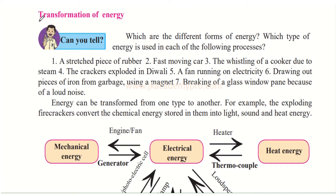The next topic we will learn is called Transformation of Energy. Can you tell which are the different forms of energy? Earlier in this chapter we have learnt there are different forms of energy like mechanical energy, electrical energy, heat energy, light, sound, chemical, etc.